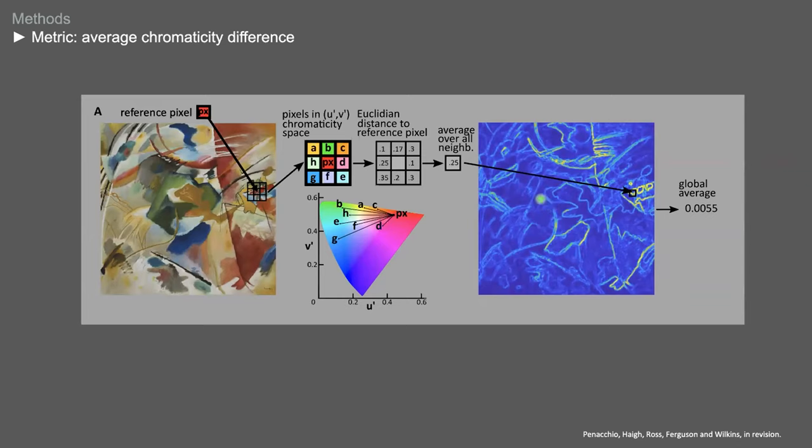So to recap, the metric is based on first principles. It exploits the finding that the cortical response to color arrangement correlates with separations in the chromaticity space. And importantly, the metric to compute average chromaticity difference is parameter free. We did not treat any parameter before contrasting it with self-reported visual discomfort.